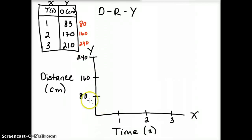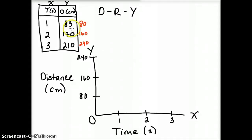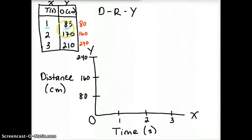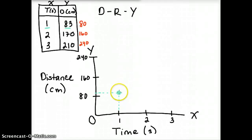We'll put zero at the origin, since we started from zero seconds and zero centimeters. Now we're going to plot the first point: at one second, find that on the x-axis, and the car traveled 83 centimeters. We estimate where 83 is — it's just above 80 — and we put a dot right where the two values intersect. 'Intersect' means wherever the two numbers come to meet.